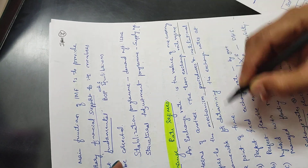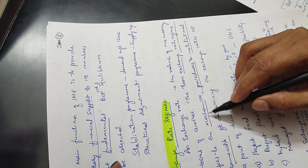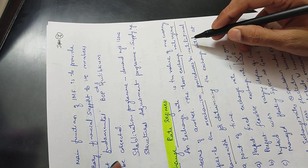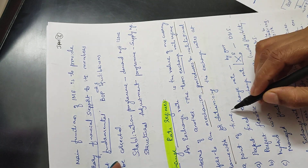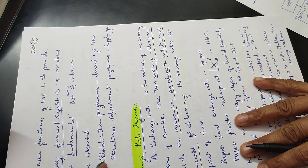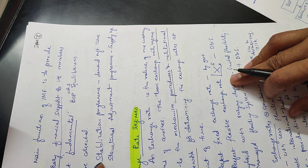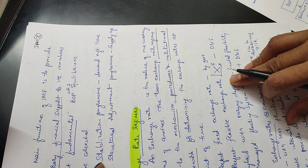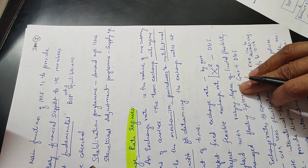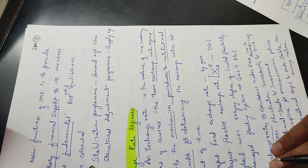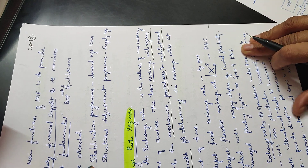The exchange rate regime refers to the mechanism, procedures, and institutional framework for determining exchange rates at a point in time. Types include: perfect fixed exchange rate set by government, perfect flexible exchange rate based on demand and supply, and a hybrid with varying degrees of limited flexibility — the managed floating system combining government intervention with demand and supply.